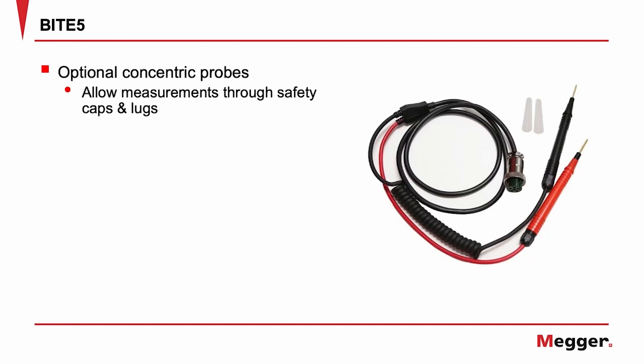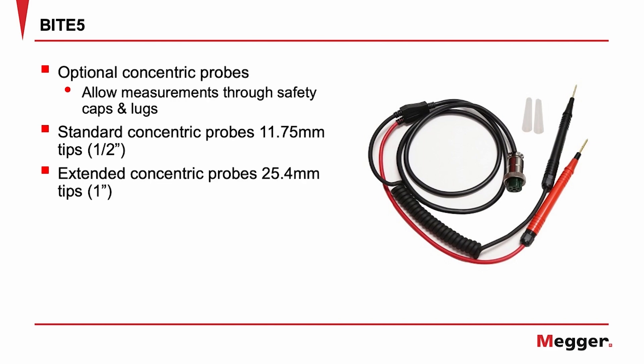The Byte 5 offers different size optional concentric probes. These probes allow measurements through safety caps and safety lugs. The standard concentric probes have 11.75 mm or 1.5 inch tips. The extended concentric probes have 25.4 mm or 1 inch tips, allowing access through the deepest safety lugs.